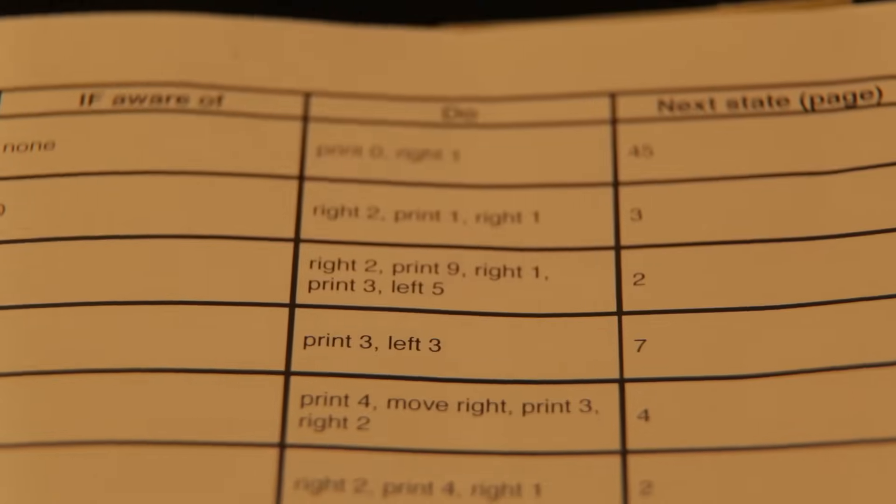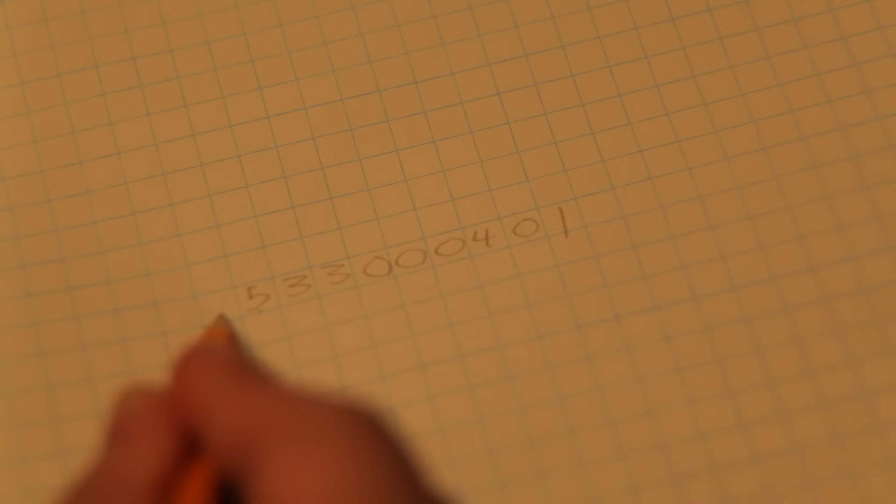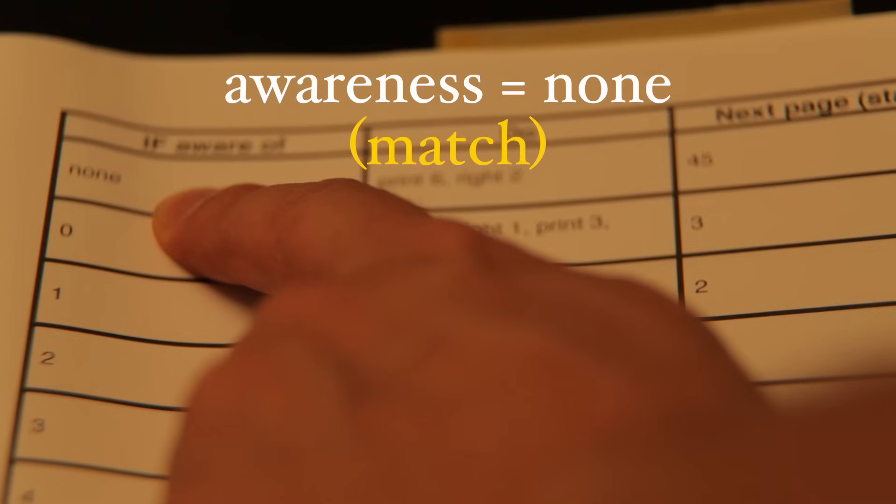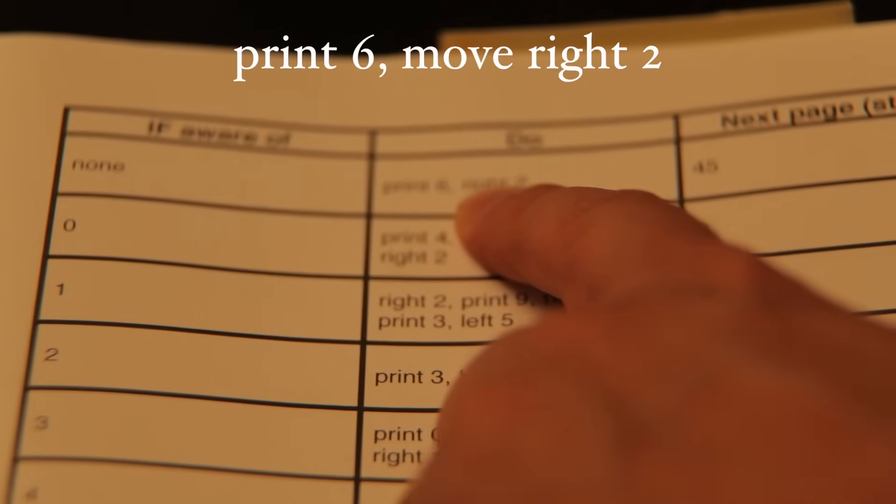And when the next state is arrived at, their current awareness, where their pencil is currently pointing, is observed again. And then they scan to find a match in the same way. Once they do, they follow the sequence.